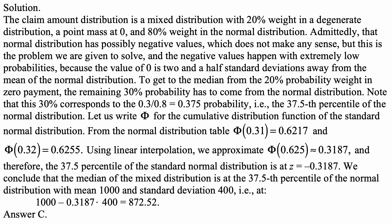So we need the 37.5th percentile of the normal distribution. Using phi for the cumulative distribution function of a standard normal distribution, from the normal distribution table: phi of 0.31 is 0.6217, and phi of 0.32 is 0.6255. Using linear interpolation, we approximate that the z-value corresponding to 0.625 is approximately 0.3187. The reason we look for 0.625 is because 1 minus 0.375 equals 0.625.